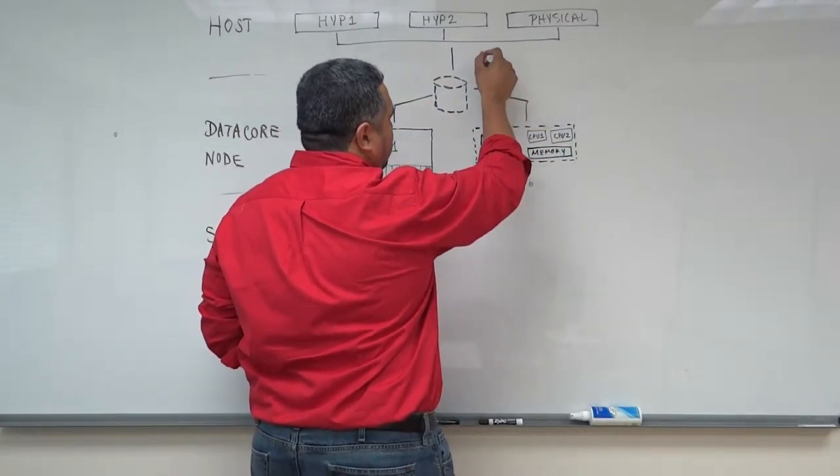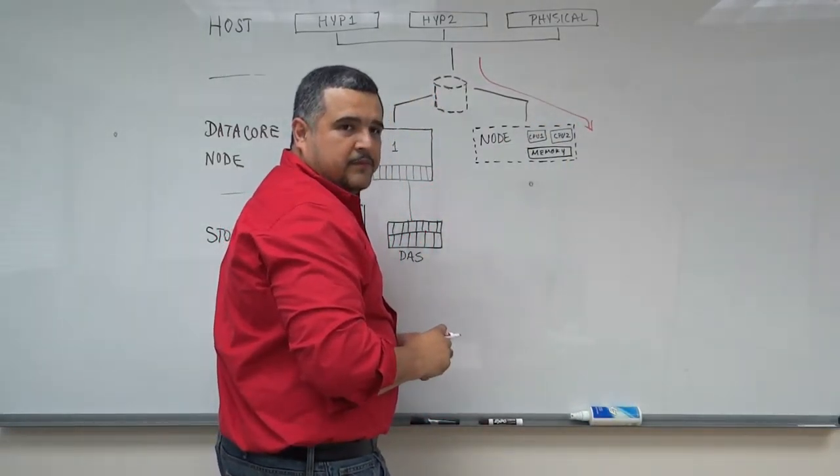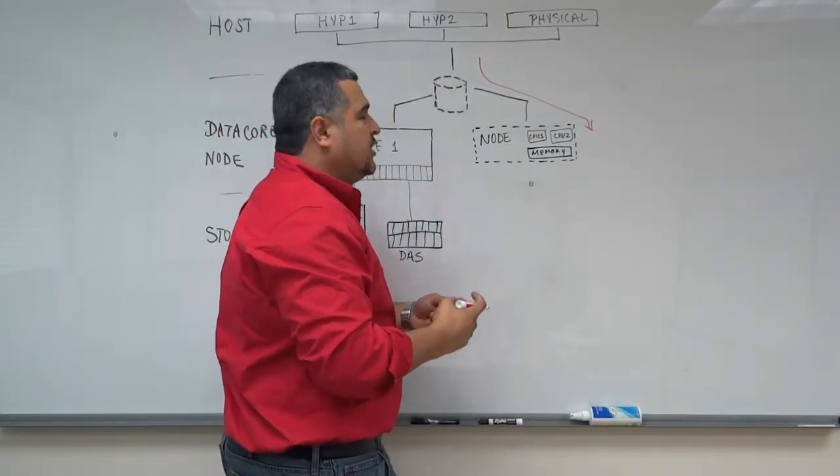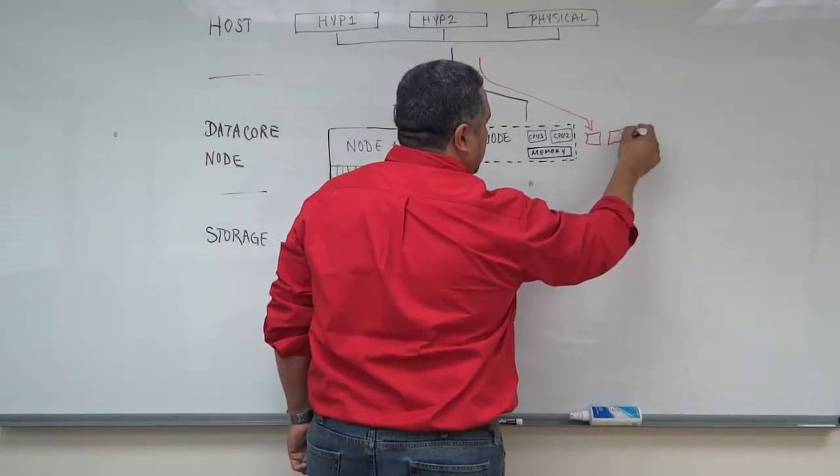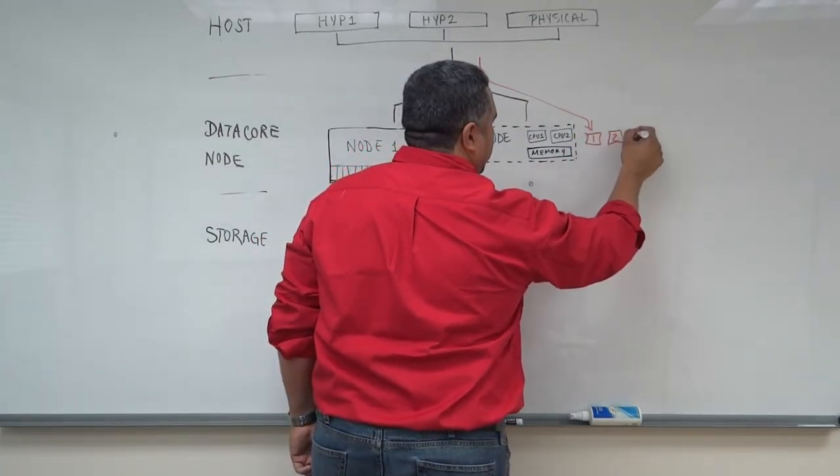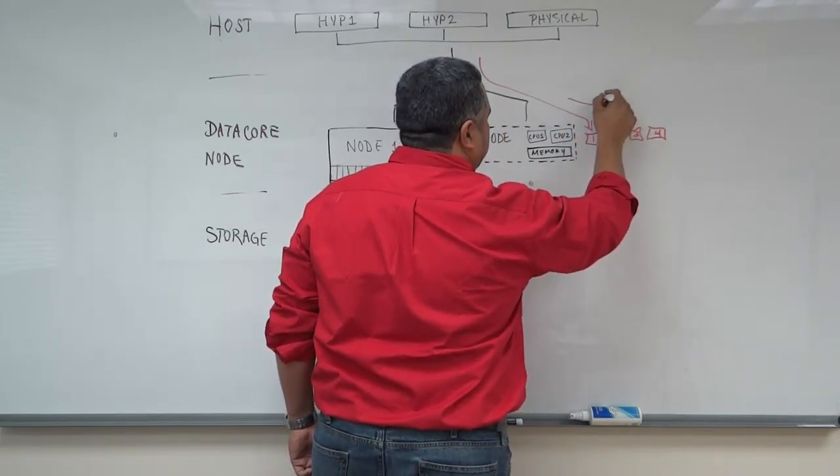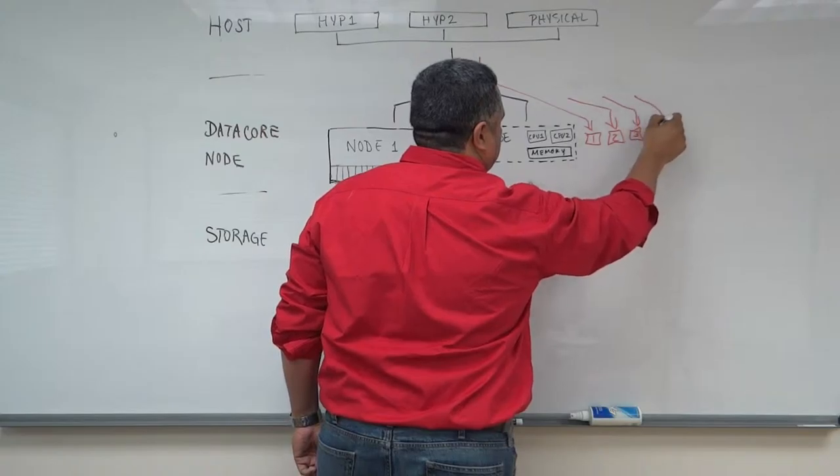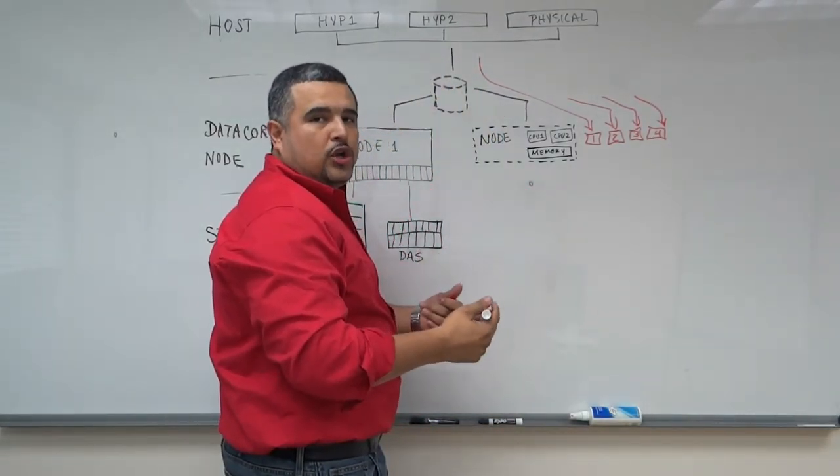When I/O comes from your application, it's first met by the CPU. This is where parallel I/O comes into the picture, where we're able to bring up multiple cores that are able to handle the I/O being sent from your applications. So this is what's able to give you more throughput and lower latency.